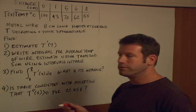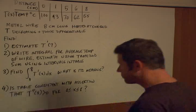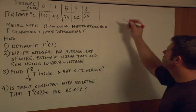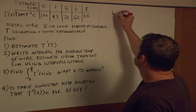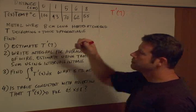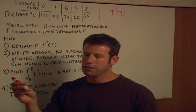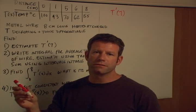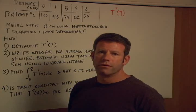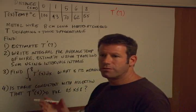I'm going to have to erase a few times, but hopefully you can read everything I'm writing. The first part asks us to estimate T prime of seven. We know that derivatives are essentially the same as instantaneous slope, but we don't have enough data here to get an instantaneous slope. The best we can do is get the average slope over a short interval.